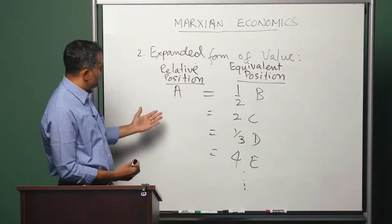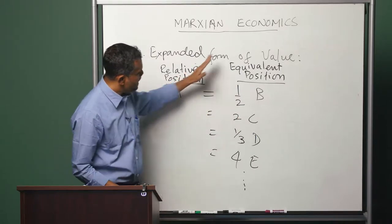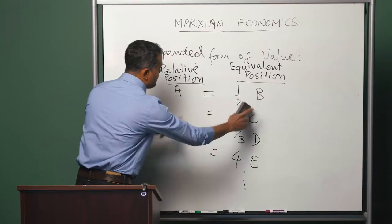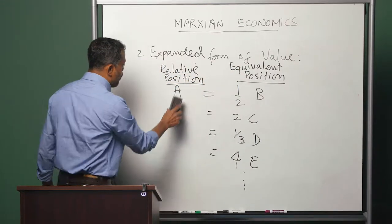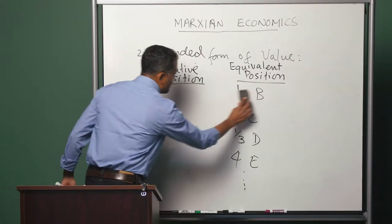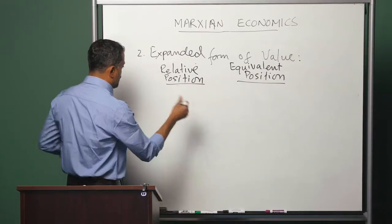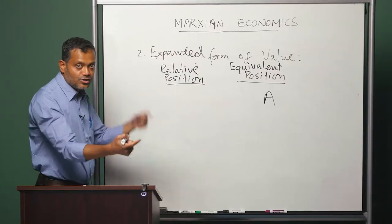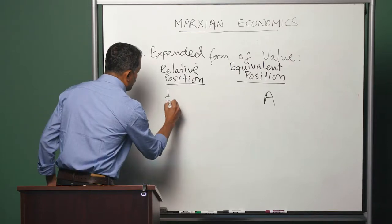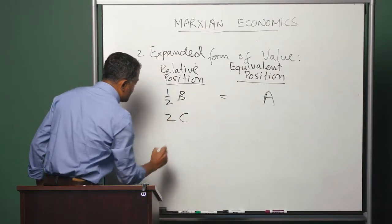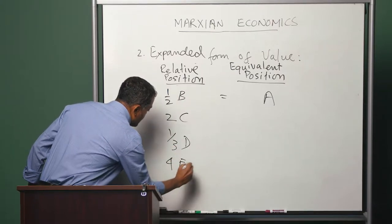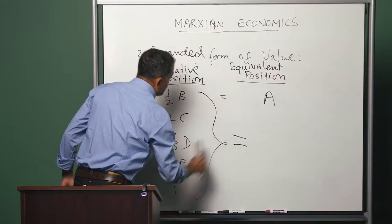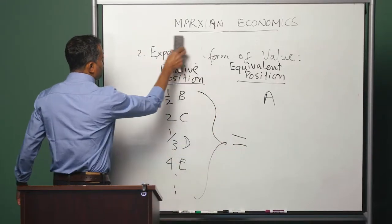Now there is a certain instability to this equation of exchange between A and all other commodities. Why? Because we can flip it around. Let us flip around the relationship expressed in this expanded form of value. I mean, let us flip this around so that A now occupies the equivalent position and all other commodities occupy the relative position. So now we have: half of B, 2 of C, one-third of D, 4 of E, and so on — all of these exchange for 1 unit of A. This is what Marx calls the general form of value.